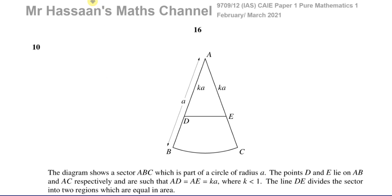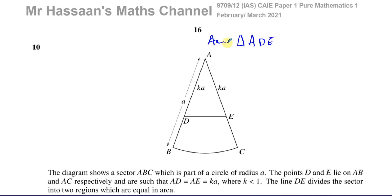The diagram shows a sector ABC — a slice of a circle, which is part of a circle of radius A. The points D and E lie on AB and AC respectively, such that AD and AE are both equal to KA, where K is less than 1, forming an isosceles triangle. The line DE divides the sector into two regions which are equal in area: the triangle ADE and the shape BDEC are both the same area.